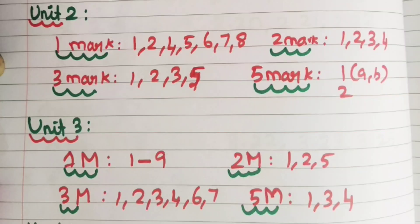Unit 2: 1 mark — 1, 2, 4, 5, 6, 7, 8. Very short answer 2 mark — 1, 2, 3, 4. Short answer 3 mark — 1, 2, 3, 5. Long answer 5 mark — question 1 parts a and b, and second question.